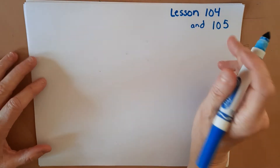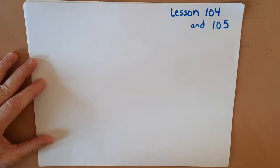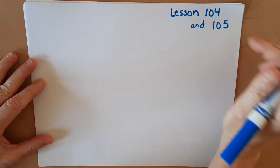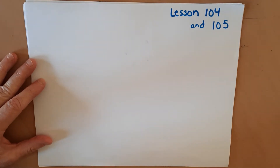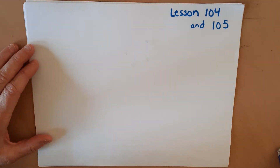In this video, I'm going to go over two lessons. I'm going to go over lesson 104, which we did in class, and lesson 105, which we did not get to in class. Lesson 104 is solving an equation for a specific variable.